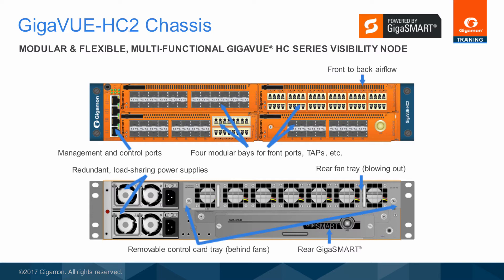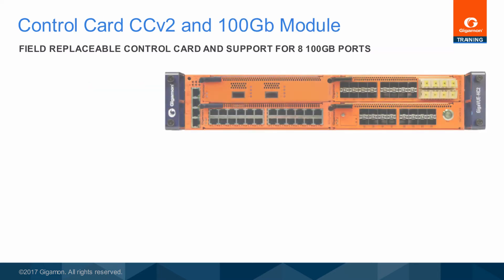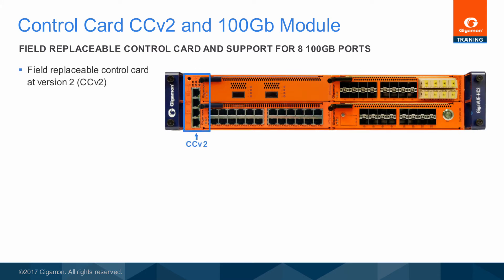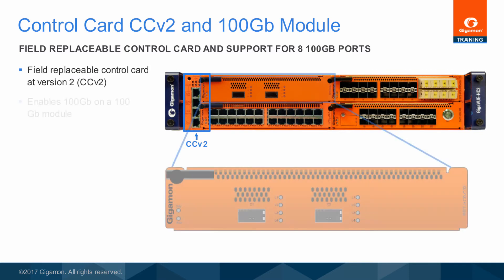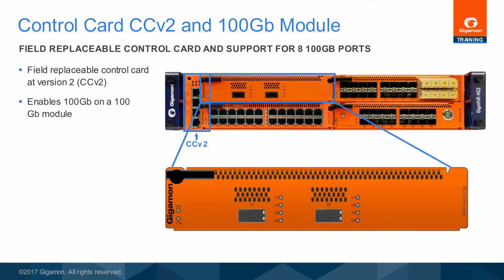Behind the hot-swappable fan module is a removable control module. The front of the two RU chassis also shows the field-replaceable control card at version 2, or CCV2. The CCV2 card, as well as the internal control card at version 1 or CCV1, is the heart of the Gigaview HC2, providing both processing and switching fabric resources, as well as user access to the CLI via the management and console ports. The CCV2 card enables support for all the existing modules, as well as the new PRT-HC0-C02 module.